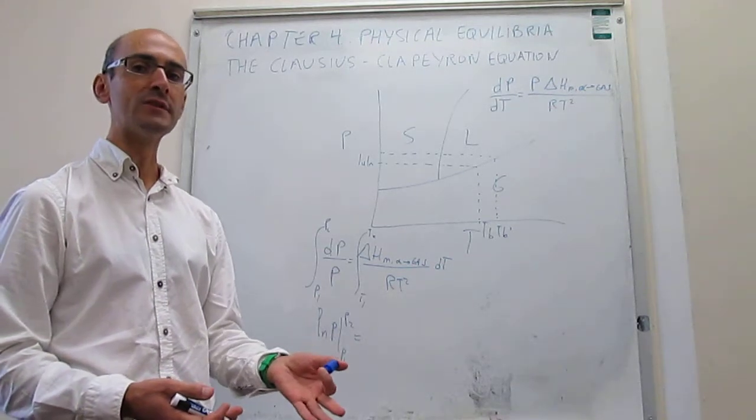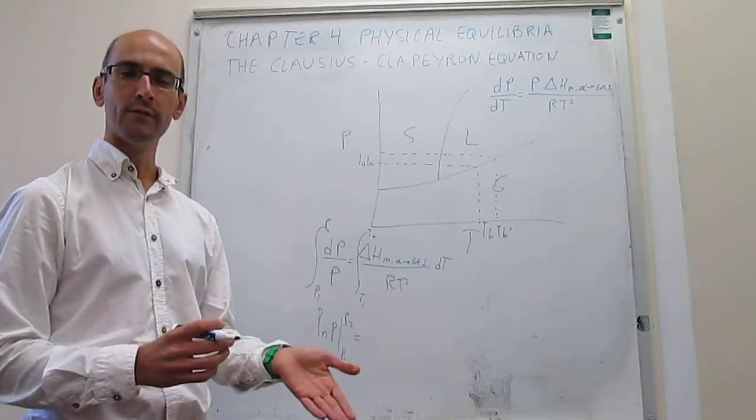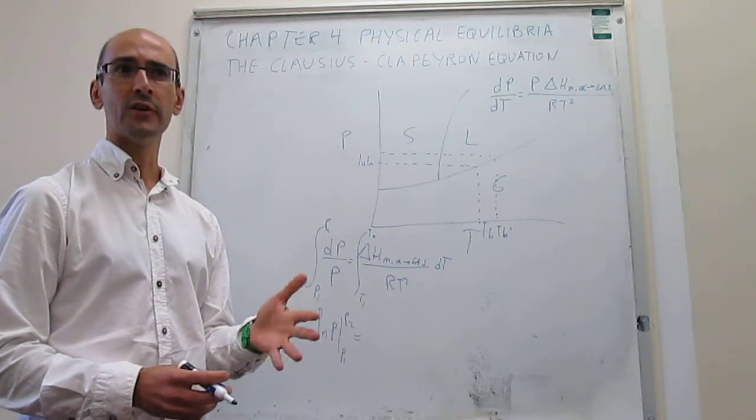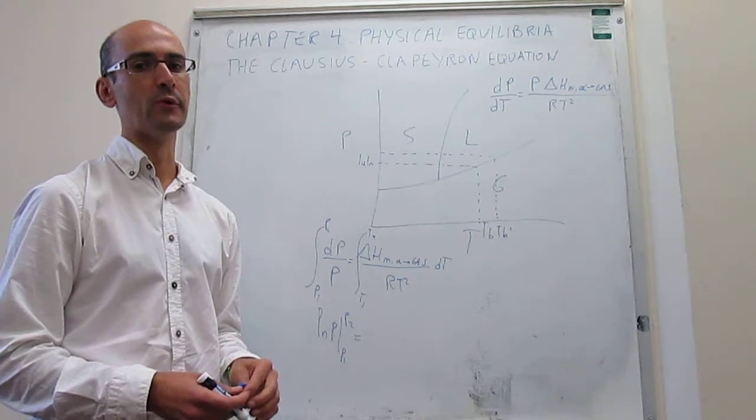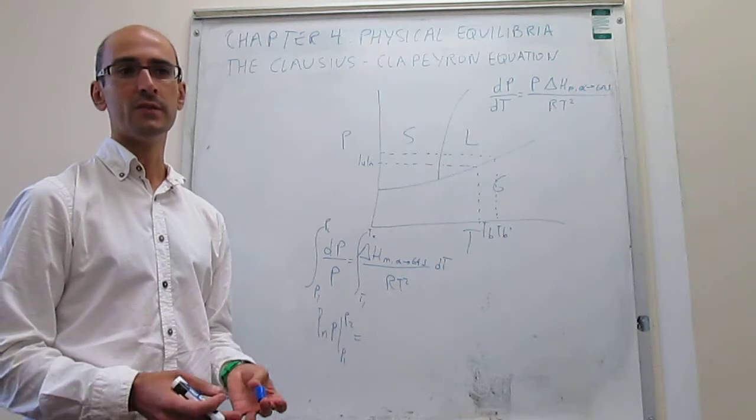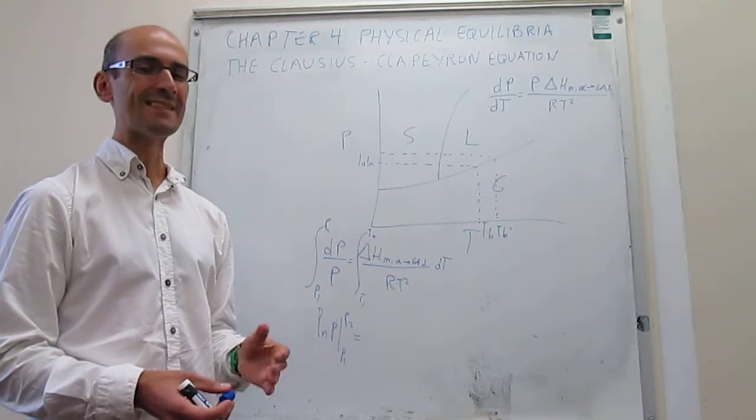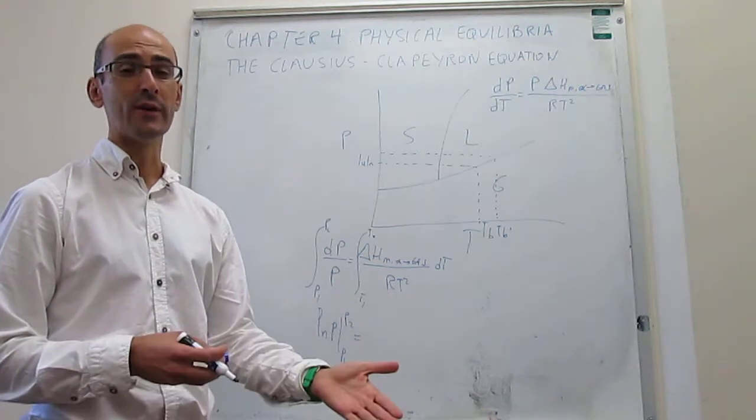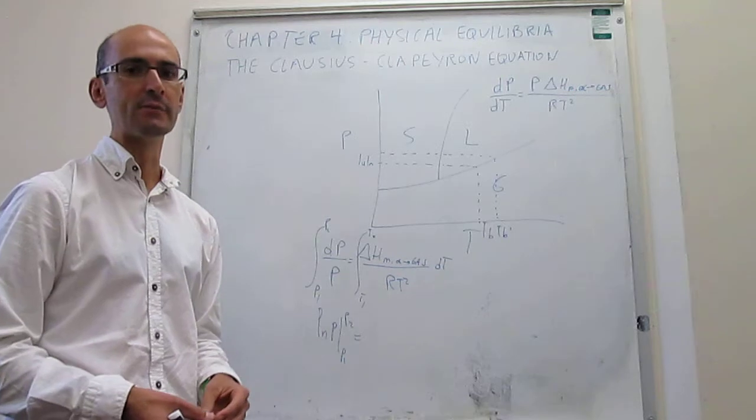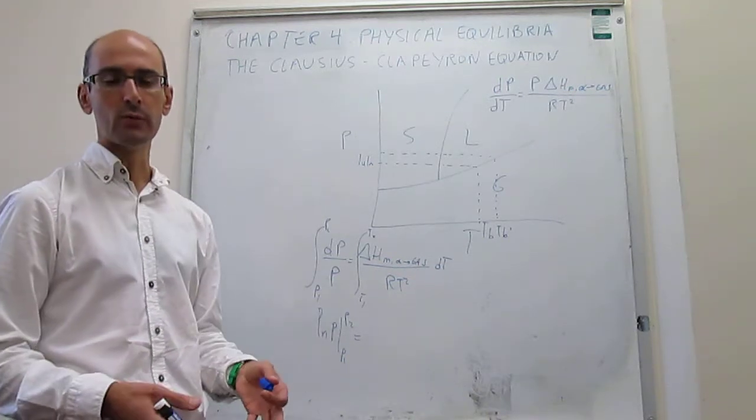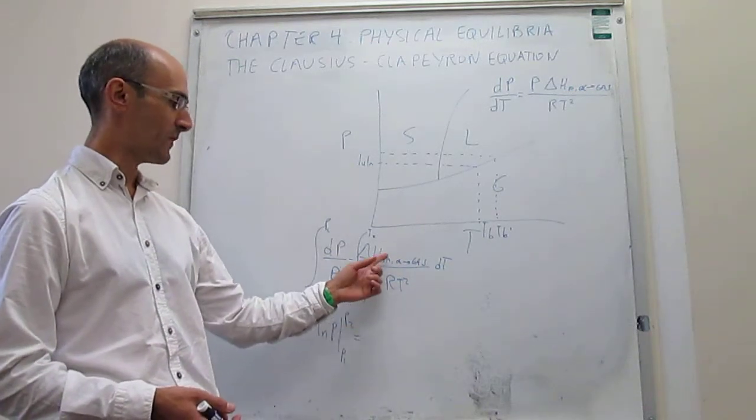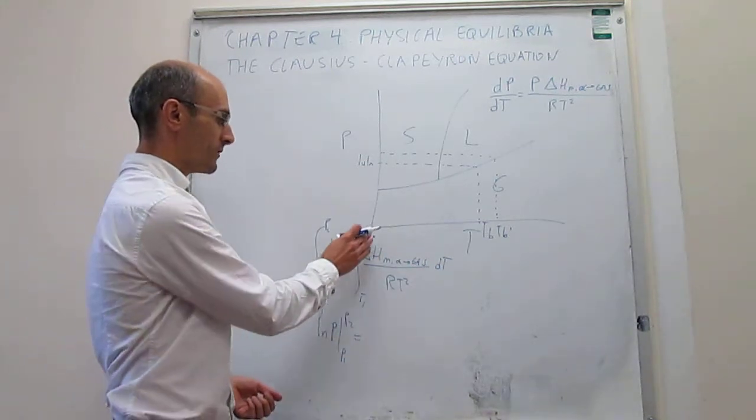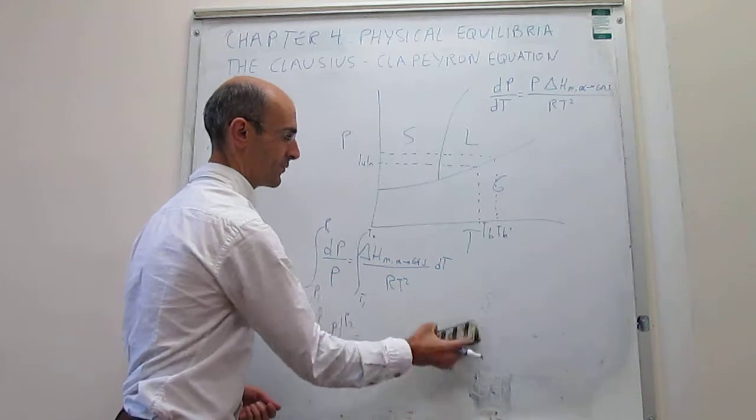For example, the variation for the enthalpy of vaporization of water from 25°C to 100°C is only about 4 kJ/mol, and the value is about 40 kJ/mol. So that's a 10% change in the vaporization enthalpy over a range of 75 degrees. That's a reasonable approximation to make. If we can consider this as constant, we can factor it out of the integral, and we have a much simpler integral to solve.